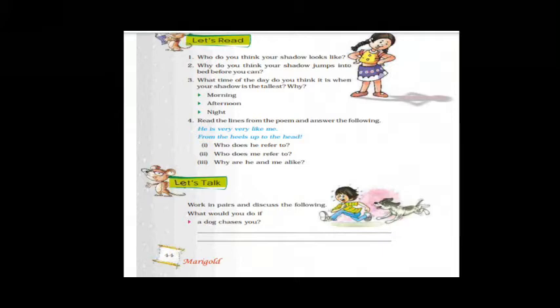Now the question and answer section. Question 1: What do you think your shadow looks like? I think my shadow looks exactly like me. Your shadow looks like you only, not like any other person. Question 2: Why does your shadow jump into bed before you? The shadow is not a physical thing and it appears faster than light — that is why the shadow jumps into the bed before you. Question 3: What time of day is your shadow the tallest? It is in the morning, because the sun rises at a slant, making your shadow look very tall.